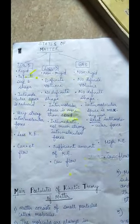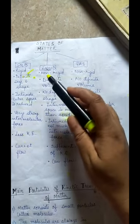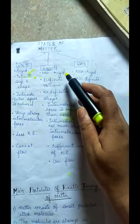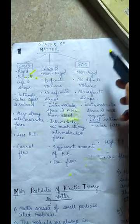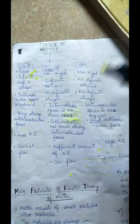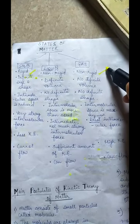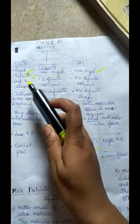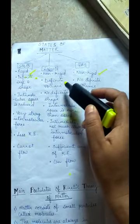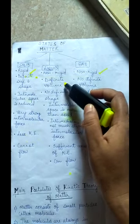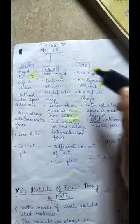In liquids, the molecules are loosely packed, so the structure is non-rigid. In gases, the molecules are very loosely packed and they also have a non-rigid structure. Solids have a definite size and shape and definite volume, whereas gases do not have definite volume.